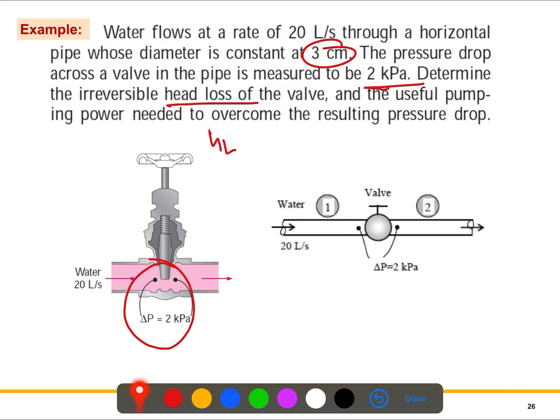If I take the point, this is point 1, this is point 2. So z1 and z2, this is at the same elevation, so we can say z1 and z2 are equal, so we can cancel it out.